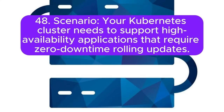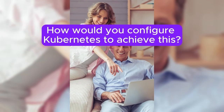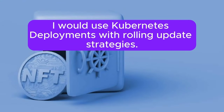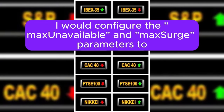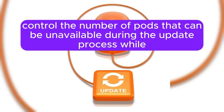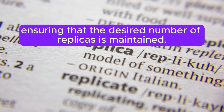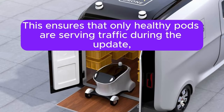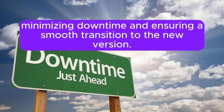Scenario 48: Your Kubernetes cluster needs to support high availability applications that require zero downtime rolling updates. Answer: I would use Kubernetes deployments with rolling update strategies to control the number of pods that can be unavailable during the update process, while ensuring that the desired number of replicas is maintained. Additionally, I would implement health checks and readiness probes to verify the health of the pods before continuing with the update. This ensures that only healthy pods are serving traffic during the update, minimizing downtime and ensuring a smooth transition to the new version.